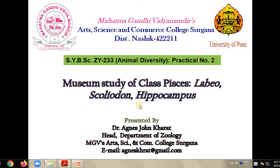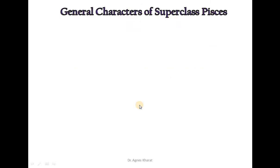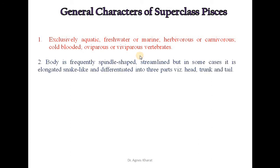Before we begin to study these three organisms, let us study the general characters of superclass Pisces. These are exclusively aquatic, freshwater or marine organisms. They can be herbivorous or carnivorous. These are cold-blooded, oviparous or viviparous vertebrates.